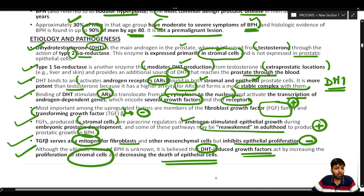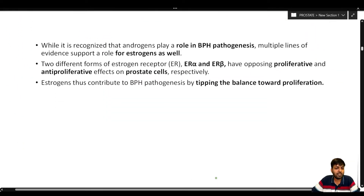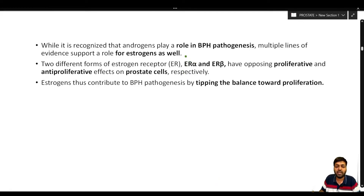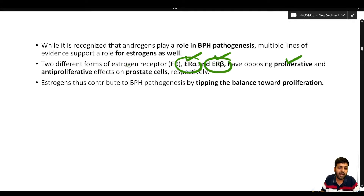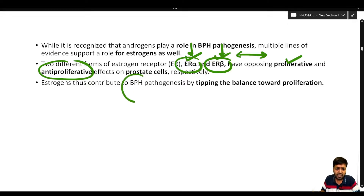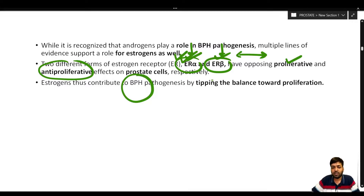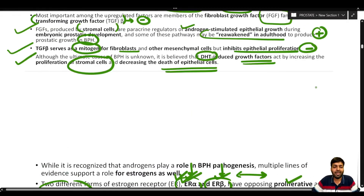Estrogen also has an important role in BPH. Estrogen acts via two forms of estrogen receptors: ER-alpha and ER-beta. When acting via ER-alpha, estrogen has a proliferative effect; via ER-beta, it has an anti-proliferative effect. Normally estrogen acts equally on both receptors, maintaining a net balance. In BPH pathogenesis, estrogen acts more via ER-alpha than ER-beta, resulting in a net proliferative effect and shifting the balance towards cell proliferation.